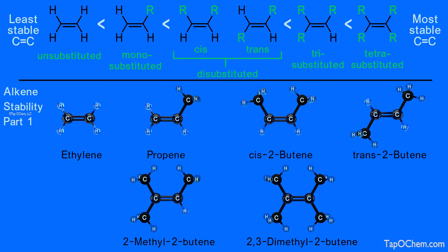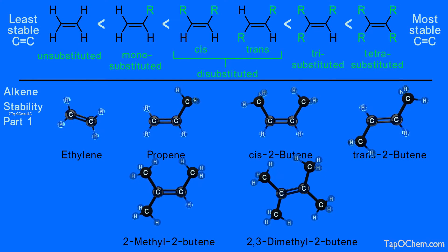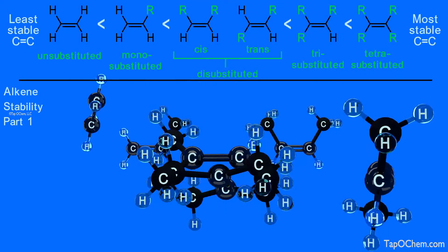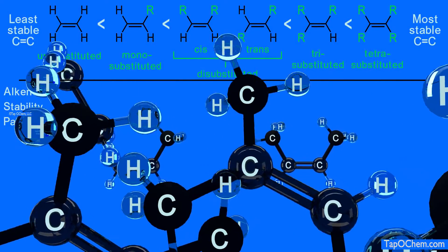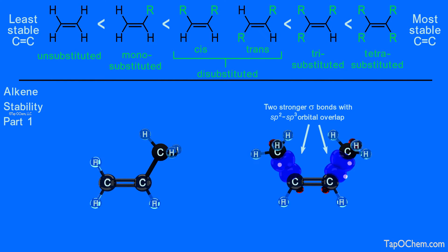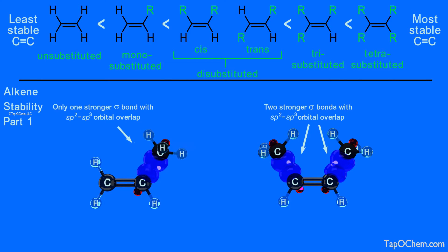How can we explain this trend? Let's remove all the ball-and-stick models from the screen except propene and cis-2-butene to explain why increasing the substitution around the carbon-carbon double bond stabilizes the alkene. There are two reasons that contribute to the fact that more substituted alkenes are more stable. First, cis-2-butene has two overlapping carbon-sp2 to carbon-sp3 sigma bonds versus propene having only one. For every added carbon-carbon bond of this type, there is an increase in bond strength.